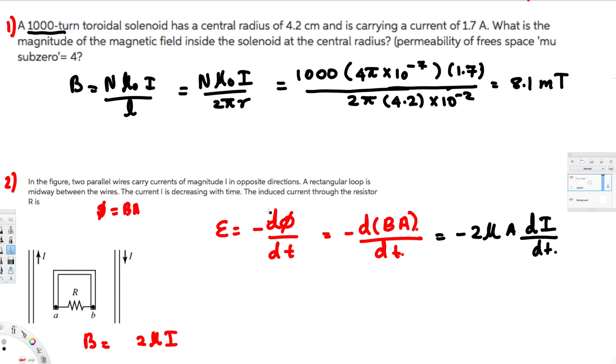Here they mentioned that the current is decreasing with time. If the current decreases, magnetic flux will also decrease because magnetic flux depends on current.